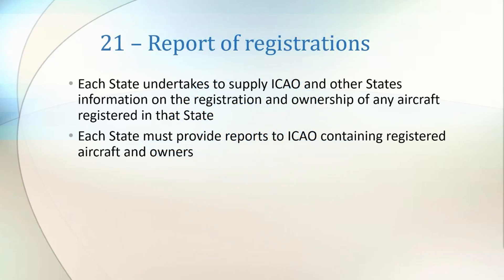Article 21 outlines a mechanism by which any state, or ICAO themselves, can request information on the ownership and registration of any aircraft belonging to a state. Additionally, ICAO requires periodic reports from all states containing a list of registered aircraft and associated owners.